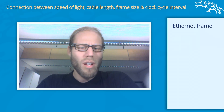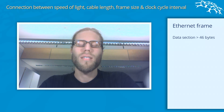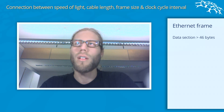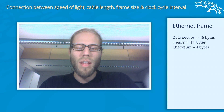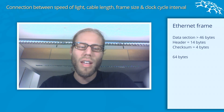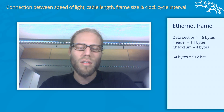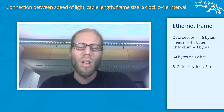We already know from the last video that the data section of an Ethernet frame has to be at least 46 bytes. So even if you only want to send one bit of data, you still have to have a data payload of 46 bytes. Additionally, there are 18 bytes for header and checksum, making 64 bytes total. Multiply by 8 bits per byte, and you get 512 bits — the number of clock cycles you occupy the wire when transferring an Ethernet frame. Multiplying by 3 meters per clock cycle,